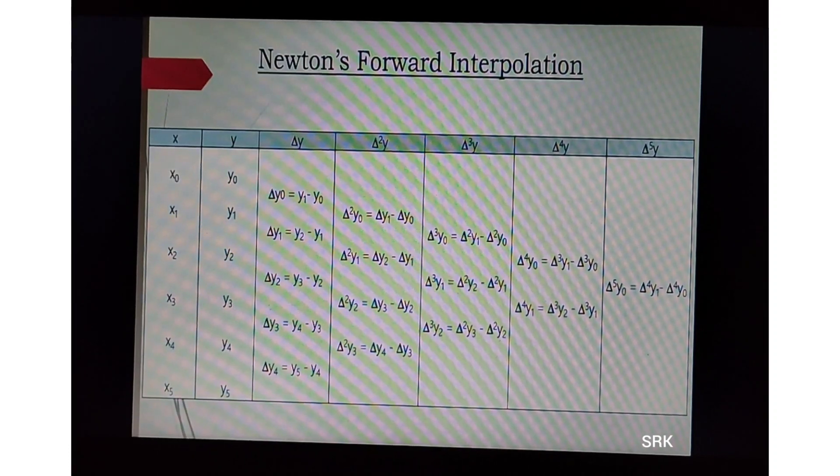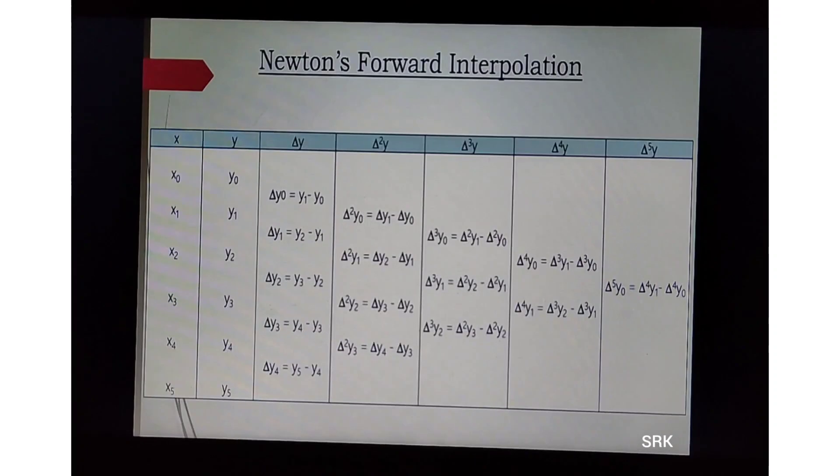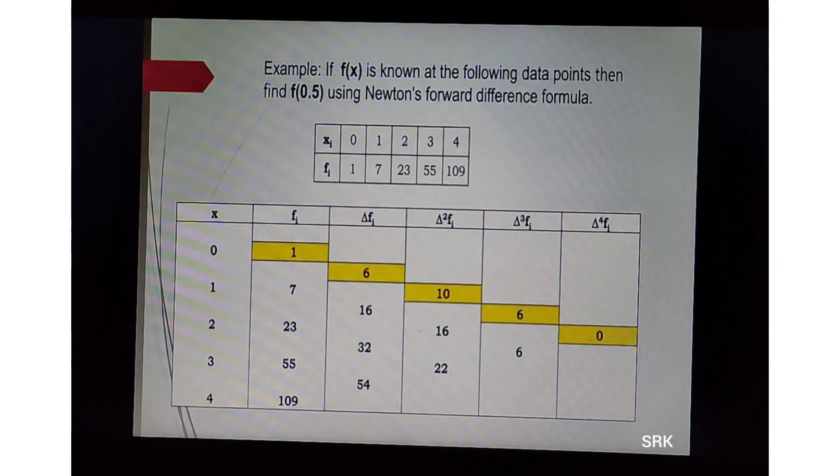This is the general table for solving Newton's forward interpolation. In the first column, we write x values. In the second column, y values. In the third column, del y. In the fourth column, del square y, and continuing with del cube y, del raised to 4y, del raised to 5y. Del y0 equals y1 minus y0. Like this, we find the values, that is the consecutive difference values.